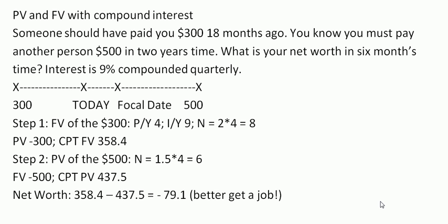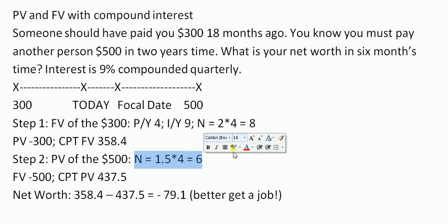Now we turn to the present value of the $500. That $500 is due at some time in the future, but we want to know its value at the focal date — we need to bring it back to the focal date. We are supposed to pay somebody $500 in two years time from today, but the focal date is half a year after today. So we care only about the elapsed time between the focal date and the $500 payment: 2 minus one-half equals one and a half.